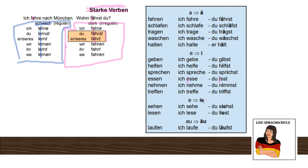Our next category is e becoming ie. The combination ie is like a long e — like two e's. Sehen, to see or to watch — ich sehe, du siehst. Lesen, to read — ich lese, du liest. I must be honest, I totally understand if pronunciation is tricky: you have the long e and then the -st sound. I'd recommend listening to native speakers and trying to imitate them.